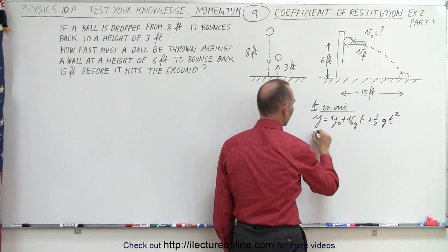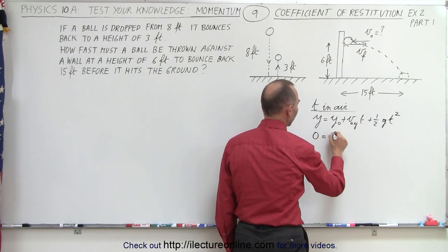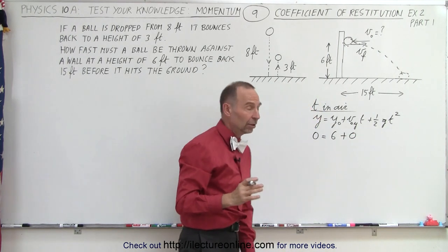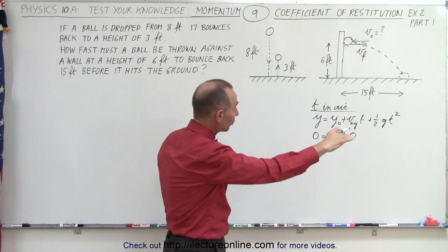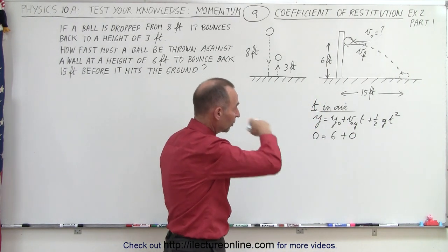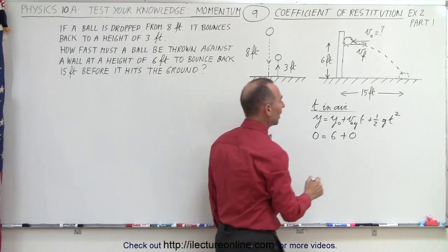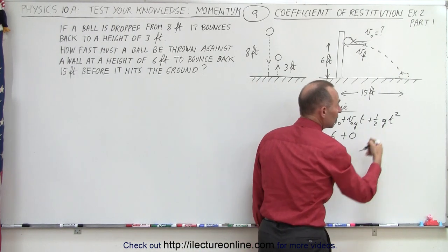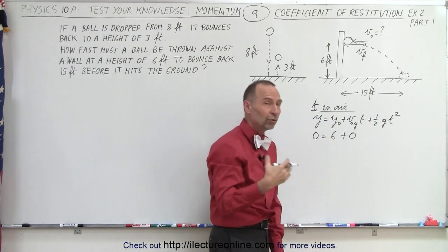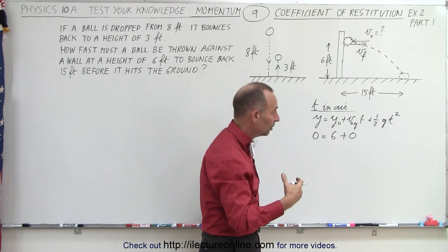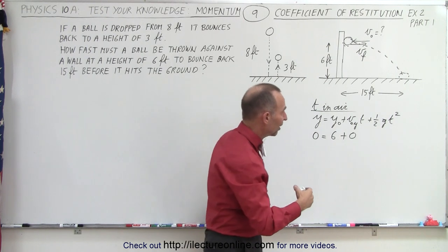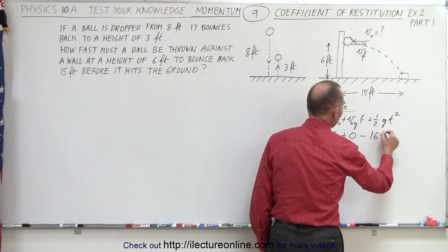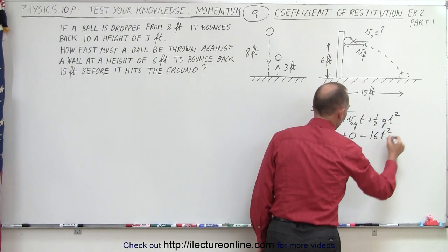Plugging in what we know: final height is zero, initial height is 6 feet, and initial velocity in the y direction is zero because the ball is hitting the wall horizontally. That gives us 0 equals 6 plus one-half g t squared. Now g is 32 feet per second squared, so half of that is 16, and it needs to be negative — giving us negative 16t squared.